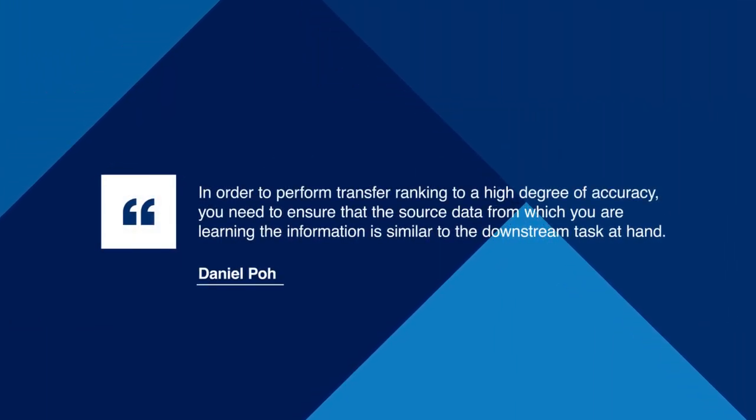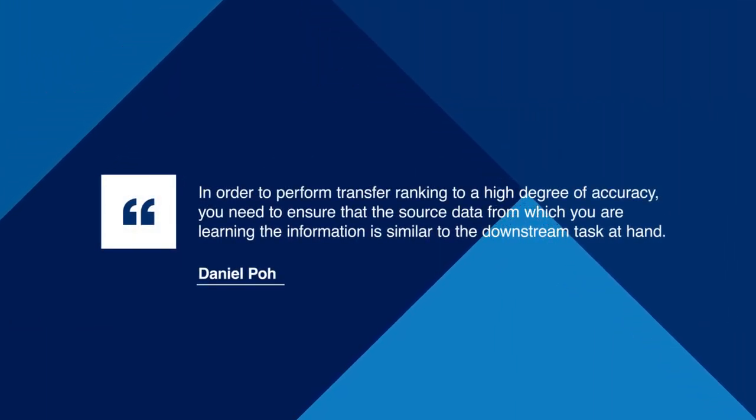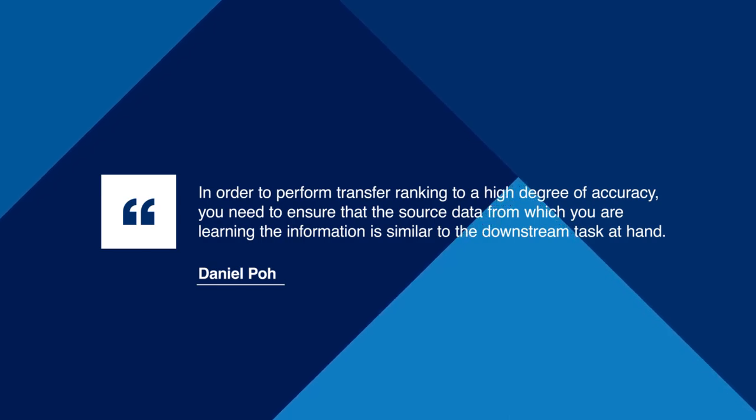In order to perform transfer ranking to a high degree of accuracy, you need to ensure that the source data from which you're learning is reasonably similar to the downstream task at hand. My name is Daniel Po, and the research I've most recently worked on is transfer ranking in finance. At its core, what it simply does is transfer knowledge from one task to another that's closely related.